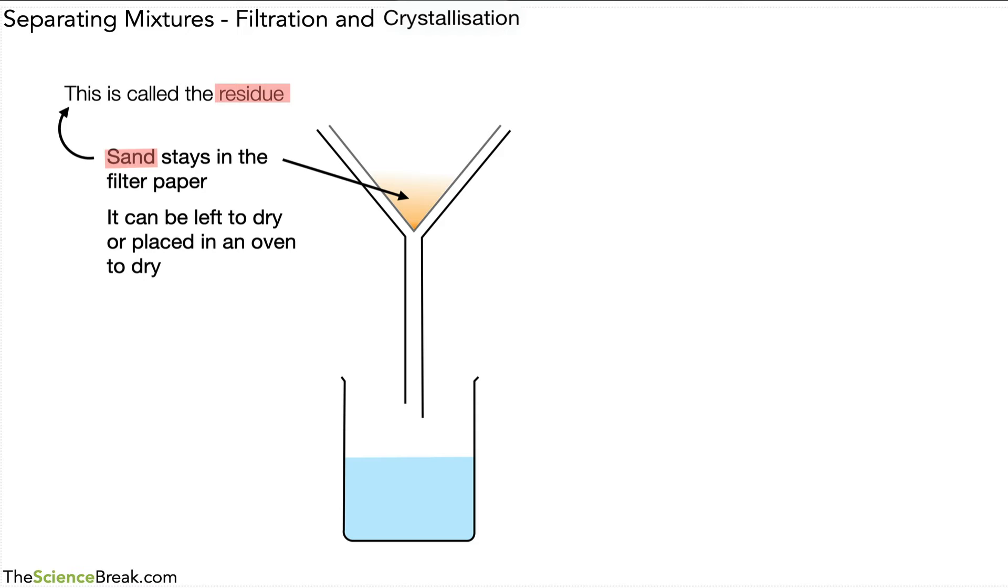We can dry the sand. It will be still wet, so we can dry it over a period of time by leaving it on a windowsill or something, or if we want it quicker we can place it in an oven to dry, so then we end up with the dry sand that we would have had at the beginning.